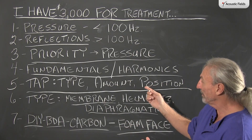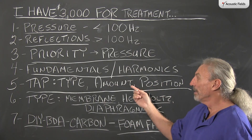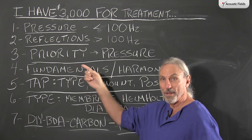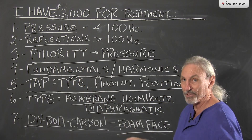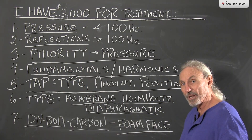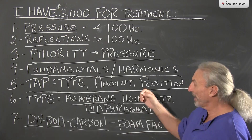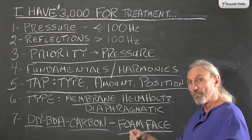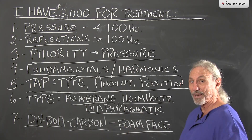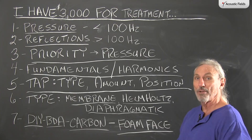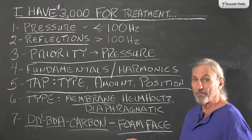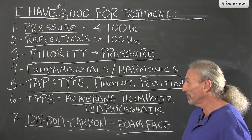What are our options? We know that energy has fundamentals and harmonics. So our 40-cycle energy has harmonics at 80, 120, and 160 cycles. We have to deal with all of that because we want to keep that low end out of our mid-ranges.